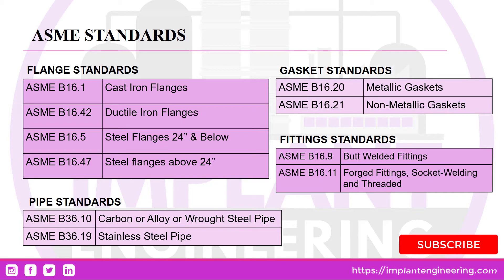ASME B16.21 is used for non-metallic gaskets. ASME B16.11 is used for forged fittings, socket welded and threaded fittings.